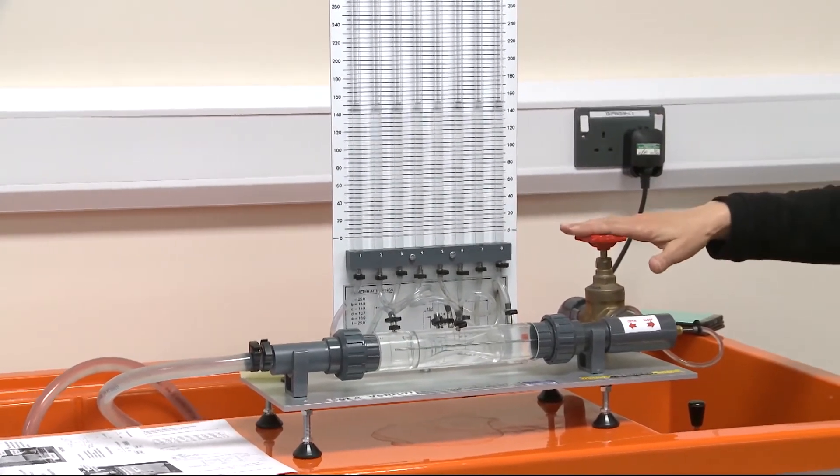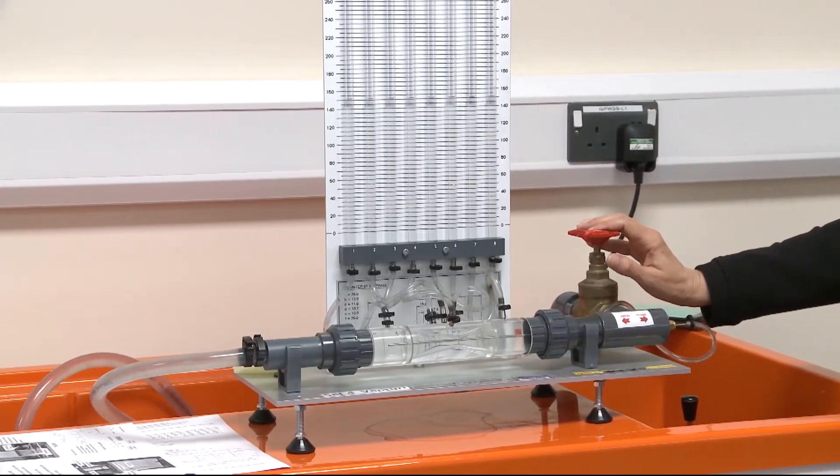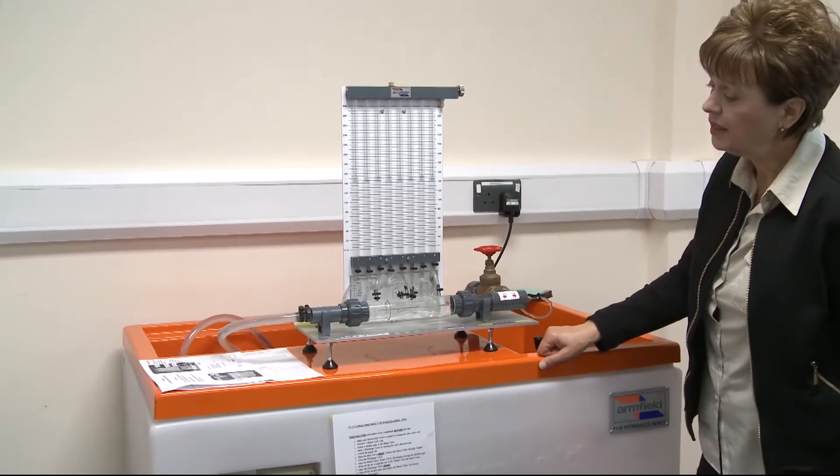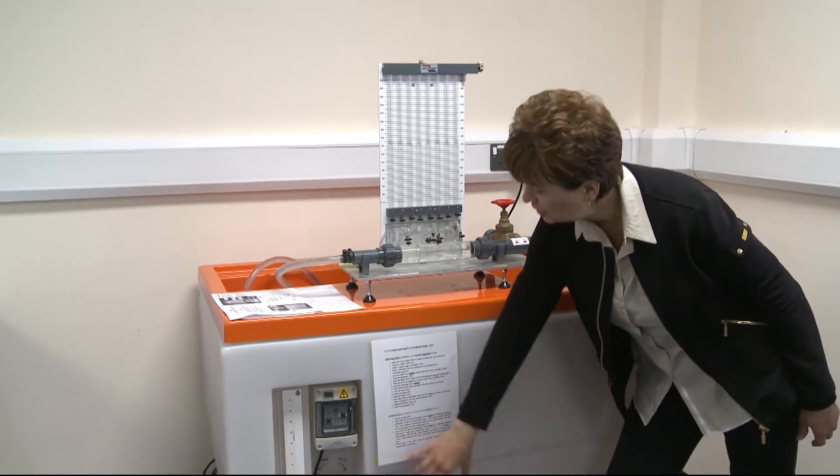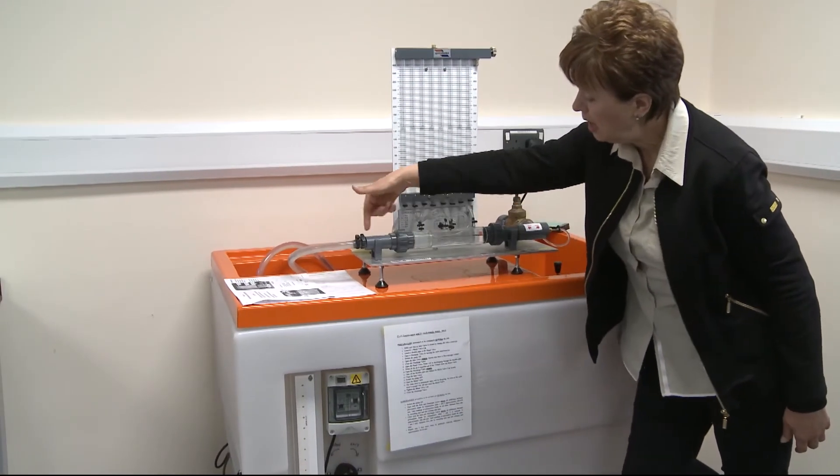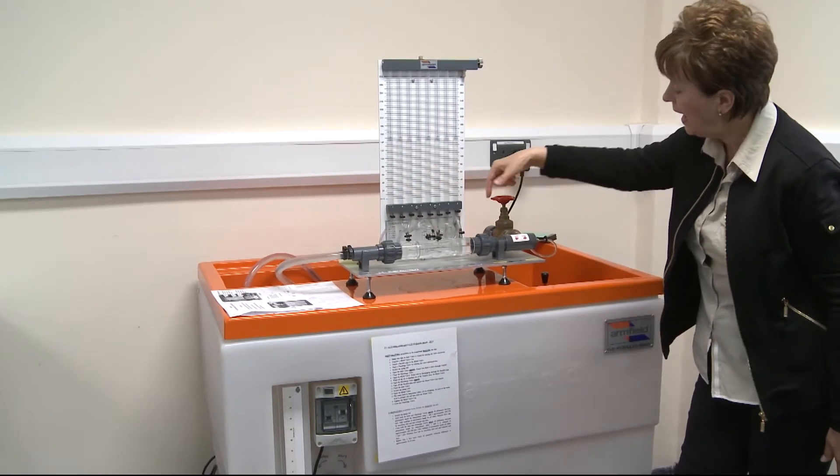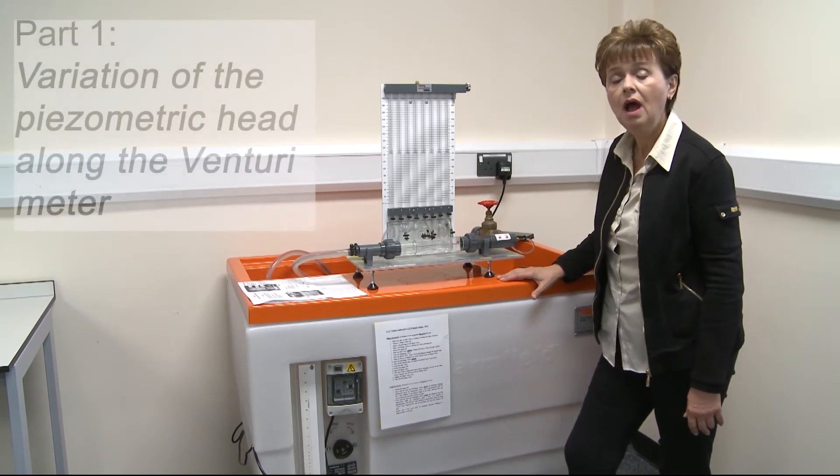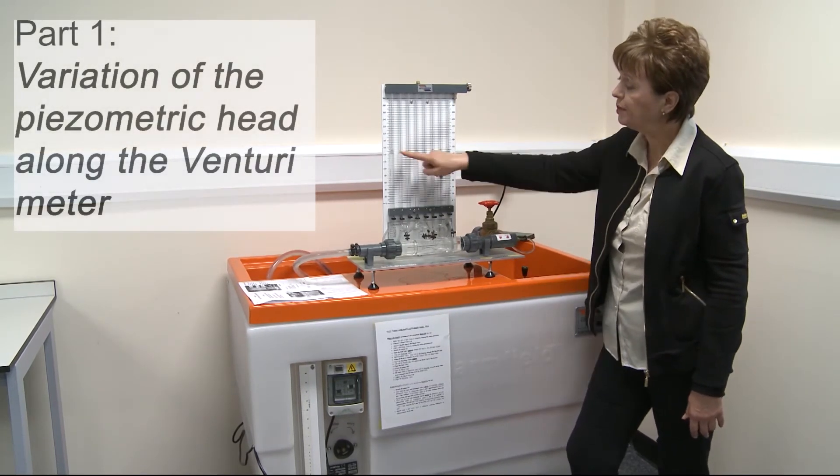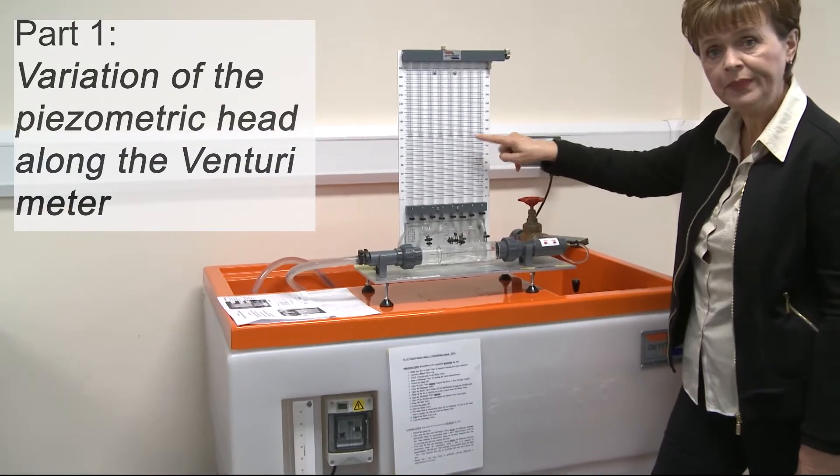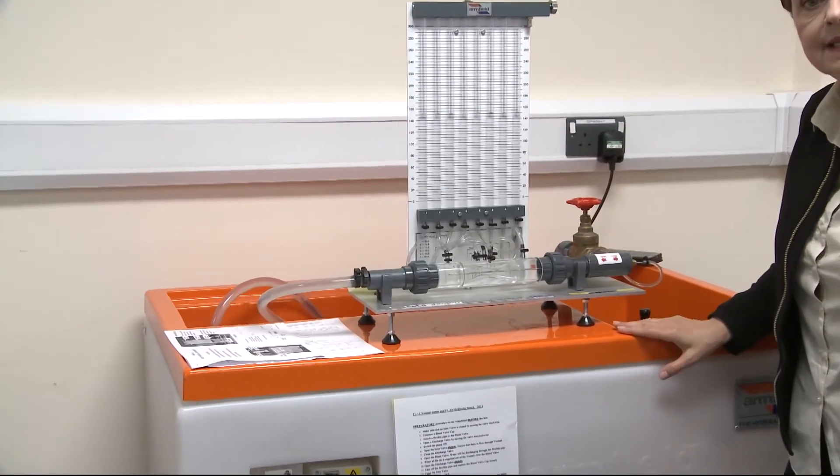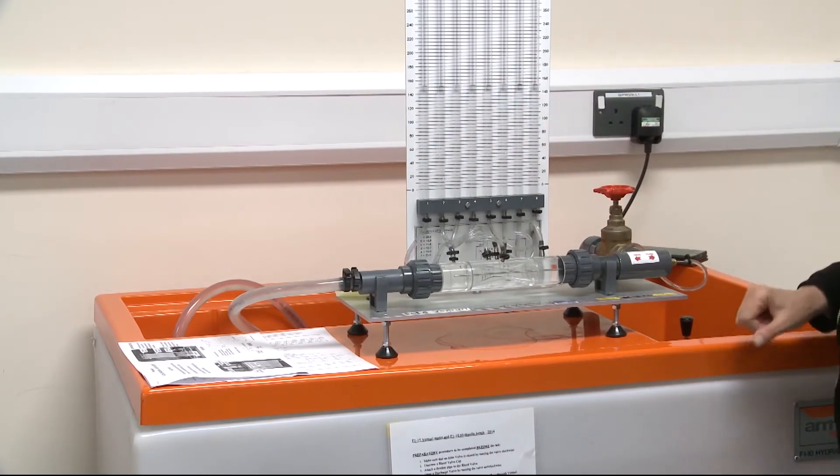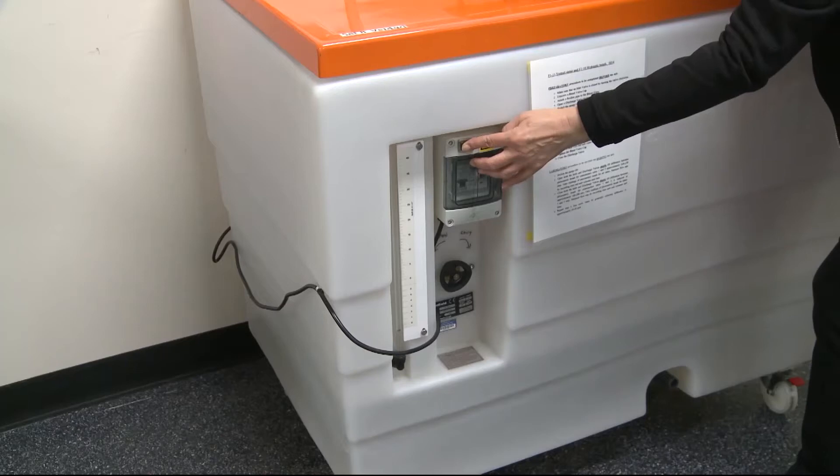At the end of the venturi meter, we have our discharge valve. So as soon as we start operating the system, the water will be pumped from hydraulic bench into this pipeline, going through venturi meter, and then discharging through this discharge pipe. In part number one, we study variation of piezometric head along the venturi meter. We will set up flow rate to maximum and we will record piezometric head at each tube.